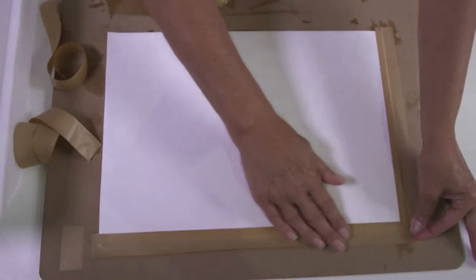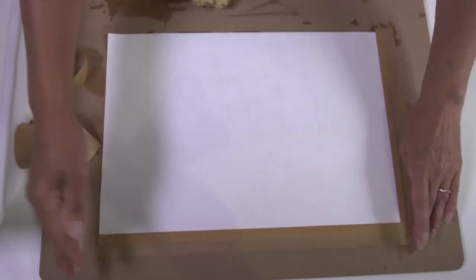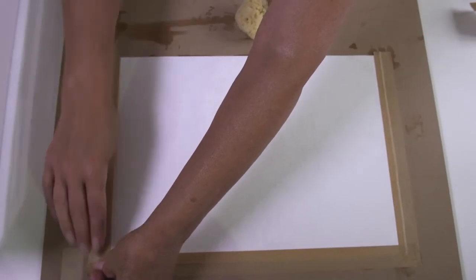Paints diluted with a lot of water will make your paper wrinkle. This is called cockling. Heavier quality paper avoids this but is more expensive.